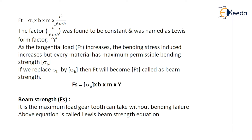As the tangential load FT increases, the bending stress induced increases, but every material has a maximum permissible bending strength sigma B. So if we replace sigma B by the permissible sigma B, then FT becomes the beam strength FS. We can write FS as sigma B into B into M into capital Y. The beam strength FS is defined as the maximum load a gear tooth can take without bending failure. This equation is called Lewis's beam strength equation.